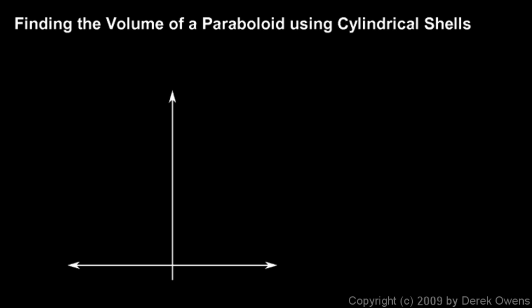Now let's talk about finding the volume of a paraboloid using cylindrical shells. We've already found the volume of a paraboloid using other methods, but we're going to find it again with cylindrical shells just to demonstrate the method. The cylindrical shell method is sometimes a little bit challenging, so we'll start with a fairly easy shape, the paraboloid, and then after we've demonstrated the method, we'll move on to find the volume of some more complicated shapes.